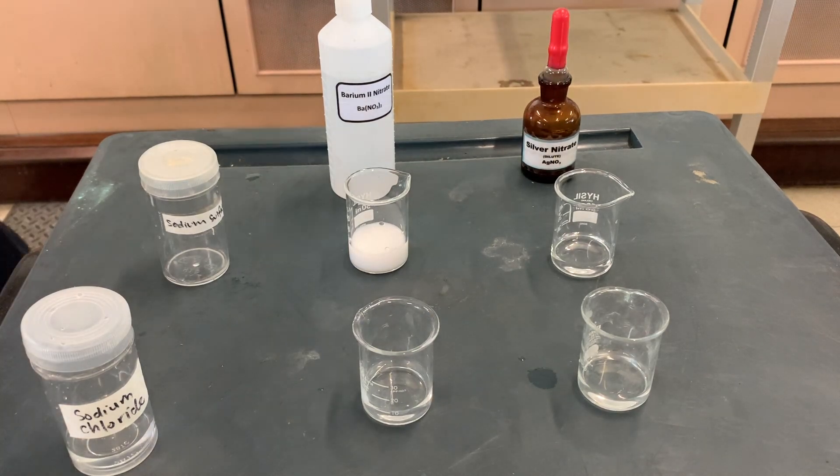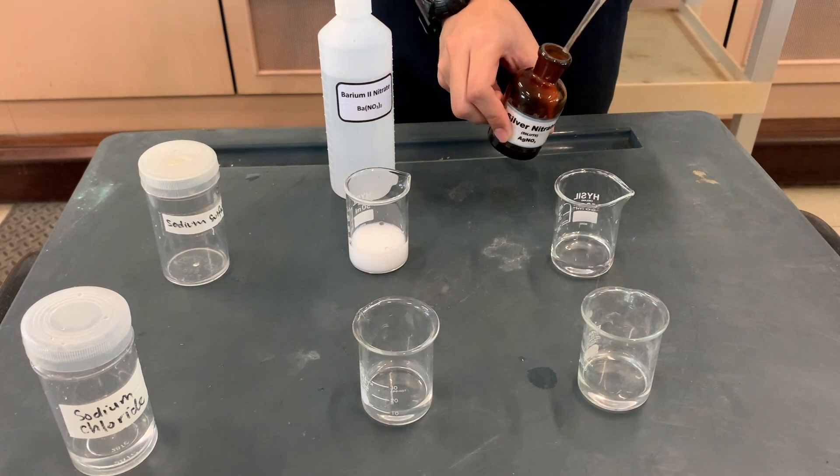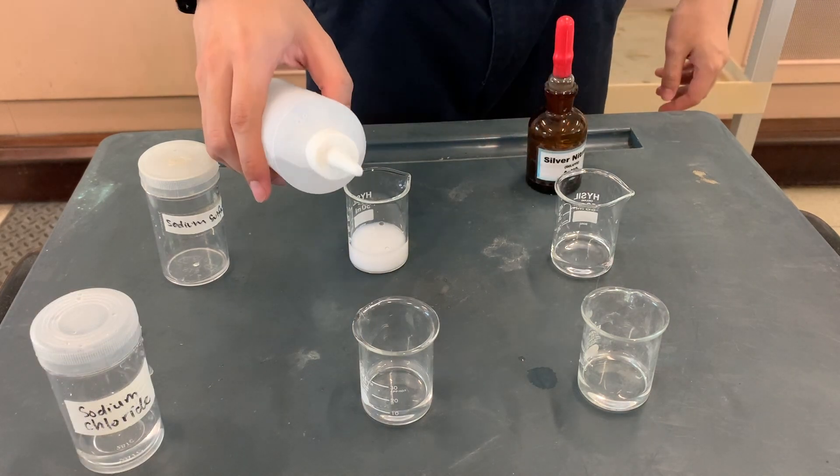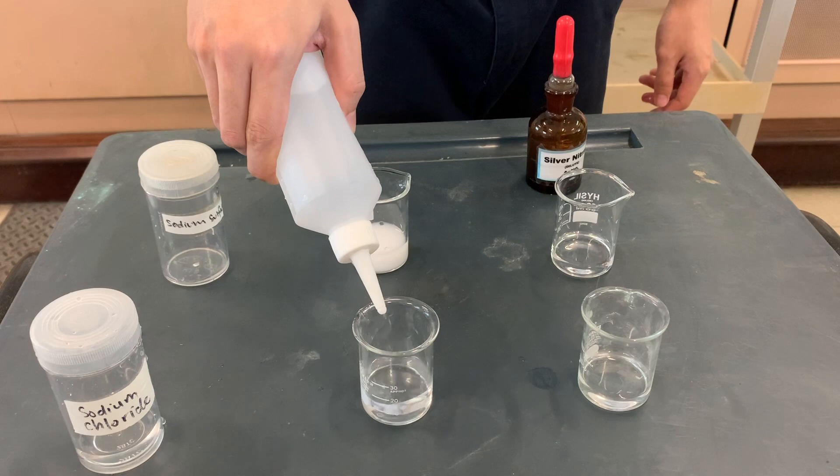Do you think we observe the same thing? When we add silver nitrate to sodium sulfate, no precipitate is formed, there is no observable change. If we add barium nitrate to sodium chloride, there is also no visible reaction.